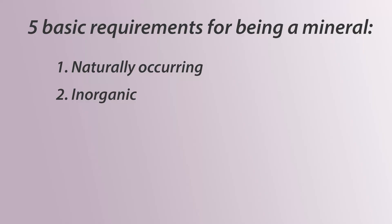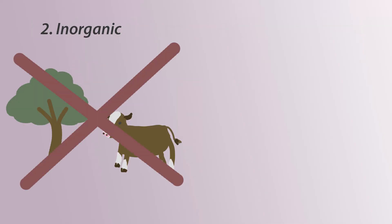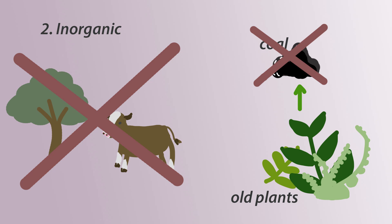Second, it has to be inorganic. It can't be produced by an animal or plant, or be made out of living things. Coal, which is made of compressed skeletons of ancient plants, would not be classified as a mineral.